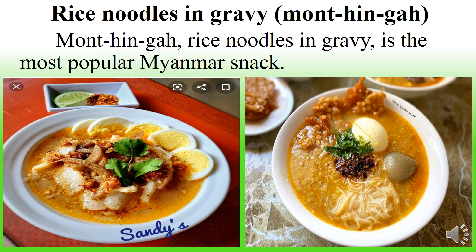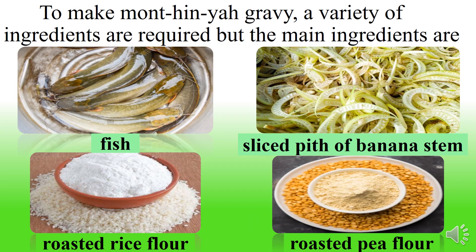Mohingya — rice noodles and gravy — is the most popular Myanmar snack. To make mohingya gravy, a variety of ingredients are required, but the main ingredients are fish, banana stem, and rice noodles.